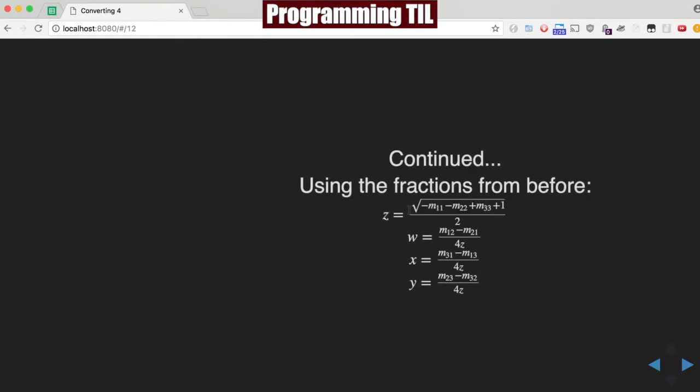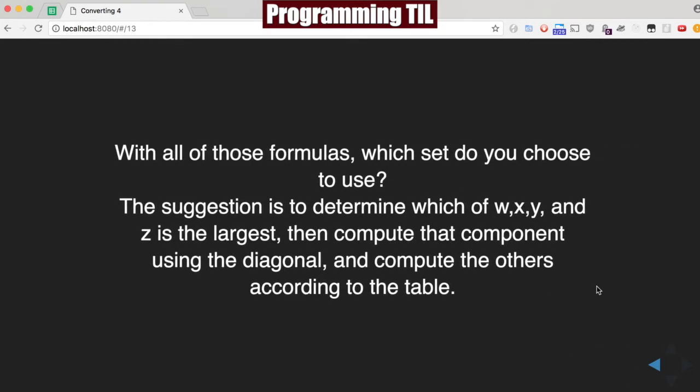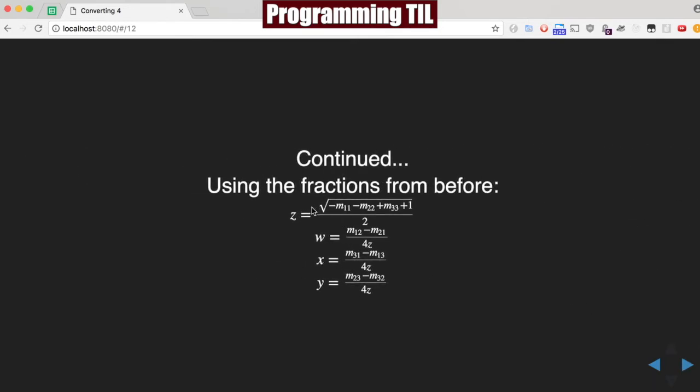And you need to know which set do you want to use to determine the W, X, Y, and Z. The rule of thumb is to use whatever has the largest of W, X, Y, and Z, and then compute the components using the diagonal and computing the others according to the table. The table being computing the diagonal first and then computing the rest. Similarly, computing the diagonal first and then computing the rest.